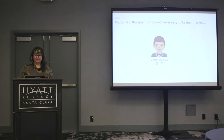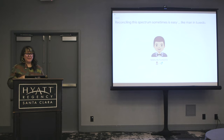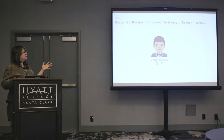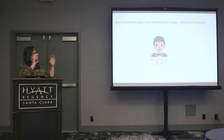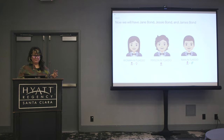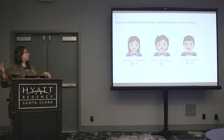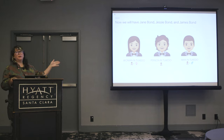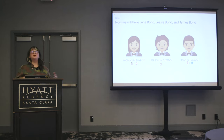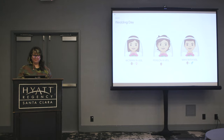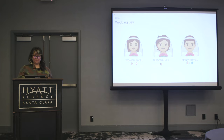Now comes the hard part. There are 12 remaining gendered emojis: princess, woman dancing, Mrs. Claus, bride with veil, pregnant woman, breastfeeding, woman with scarf, man in tuxedo, bearded person, man dancing, Santa Claus, and prince. An easy example is simply changing man in tuxedo to person plus man symbol — so the existing code point becomes person in tuxedo, and you can add code points for female and male. Now we have Jane Bond, Jesse Bond, and James Bond — the whole suite. It also scales to person in veil, woman in veil, and man in veil.